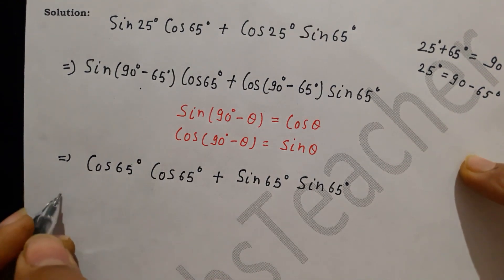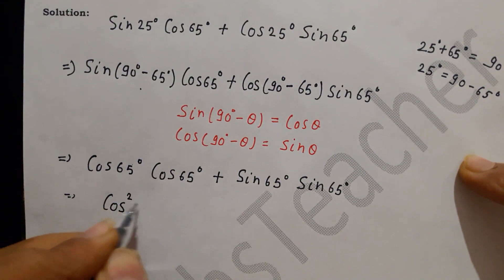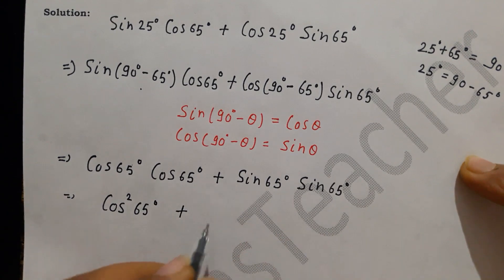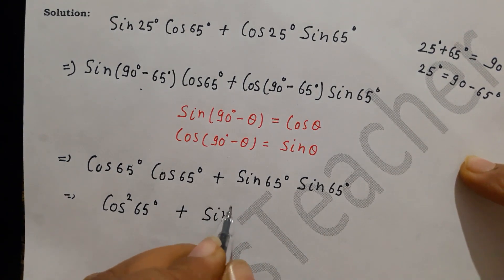Cos 65, cos 65, this happens two times. Cos squared 65 degrees. And this will be our sin, sin squared 65 degree.